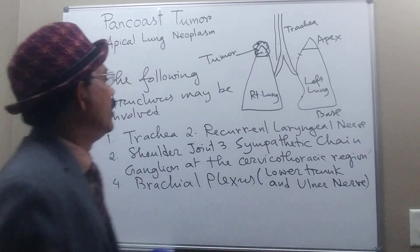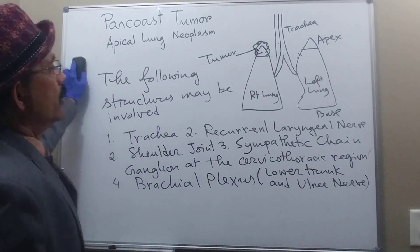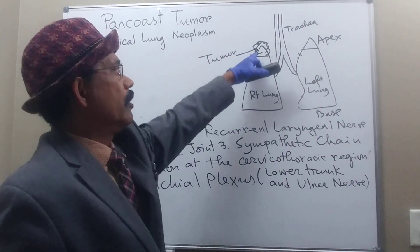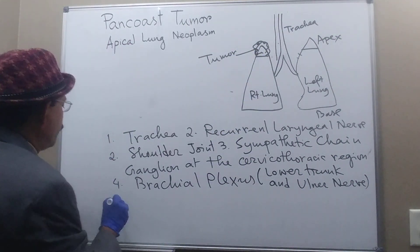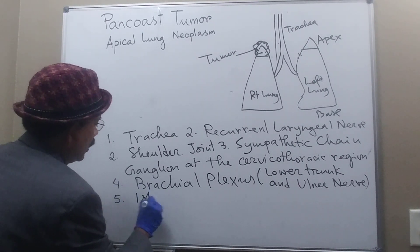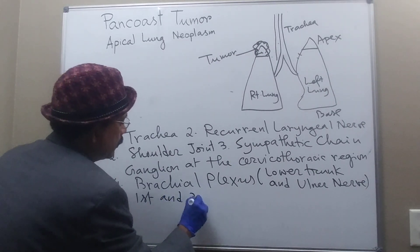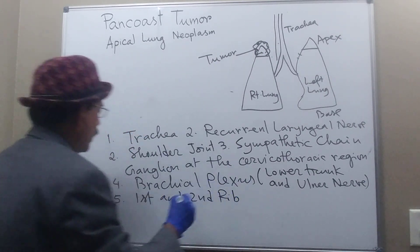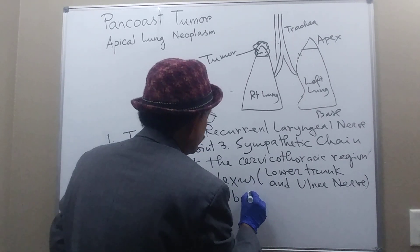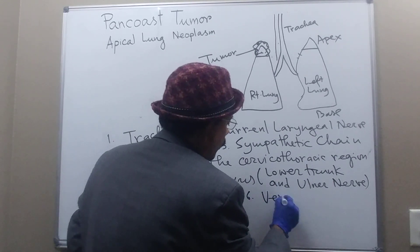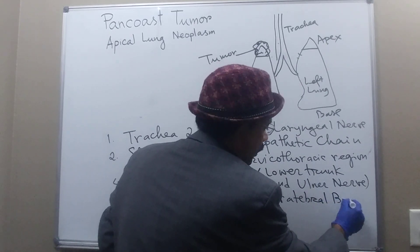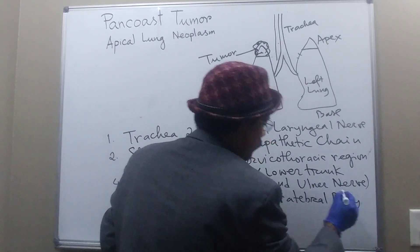The signs and symptoms depend on which structures are involved and the size of the tumor. There may also be bony involvement — involvement of the first and second ribs — and involvement of the vertebral body in the cervicothoracic region.